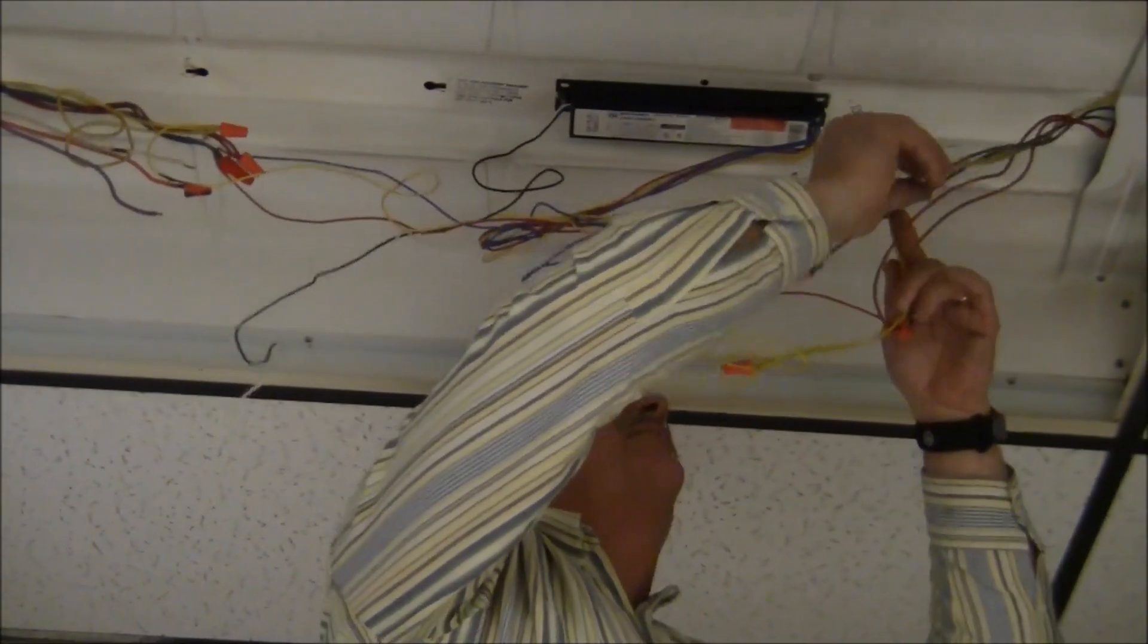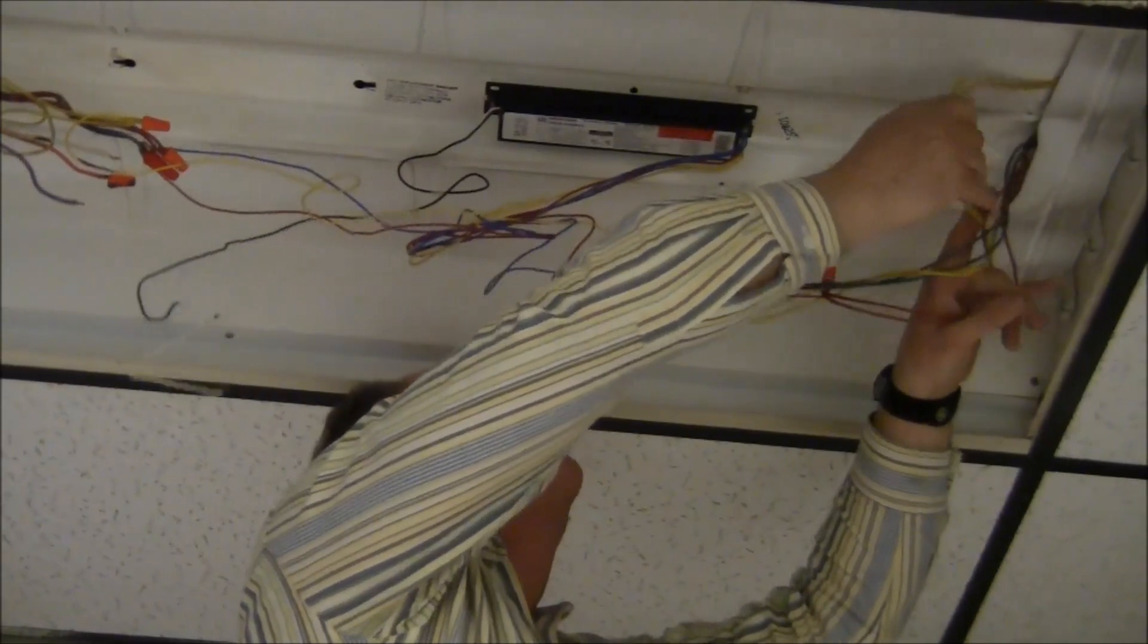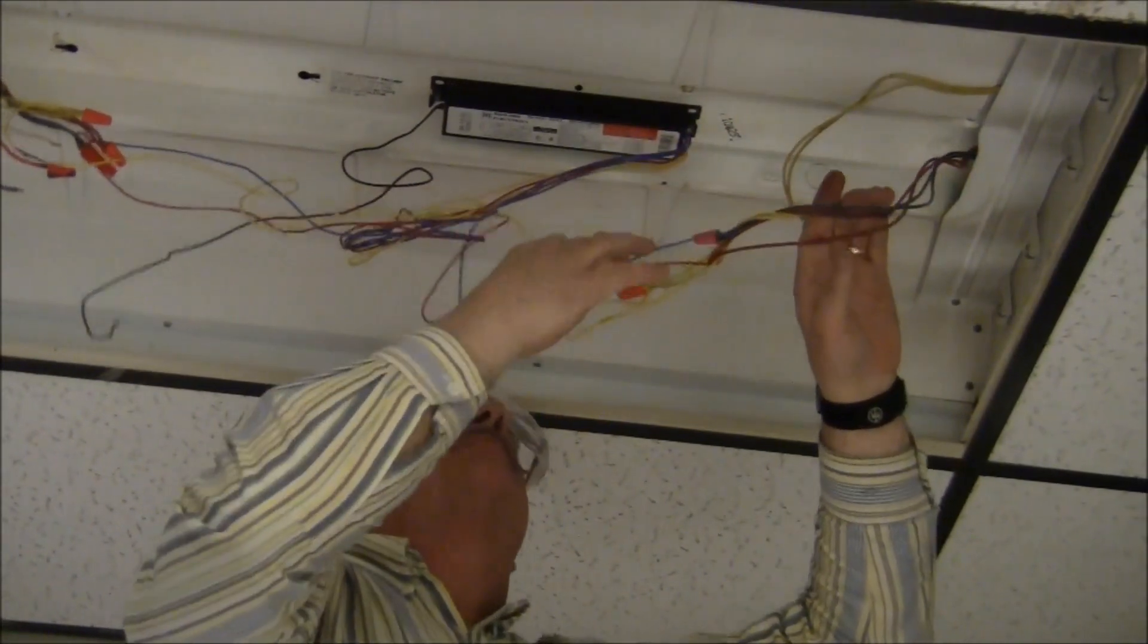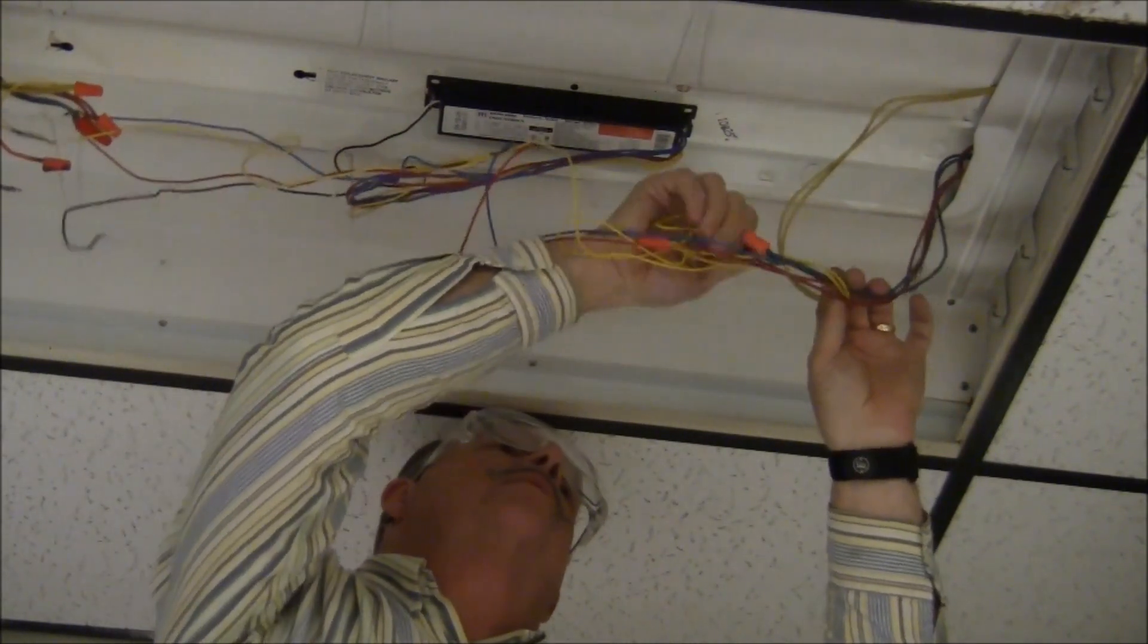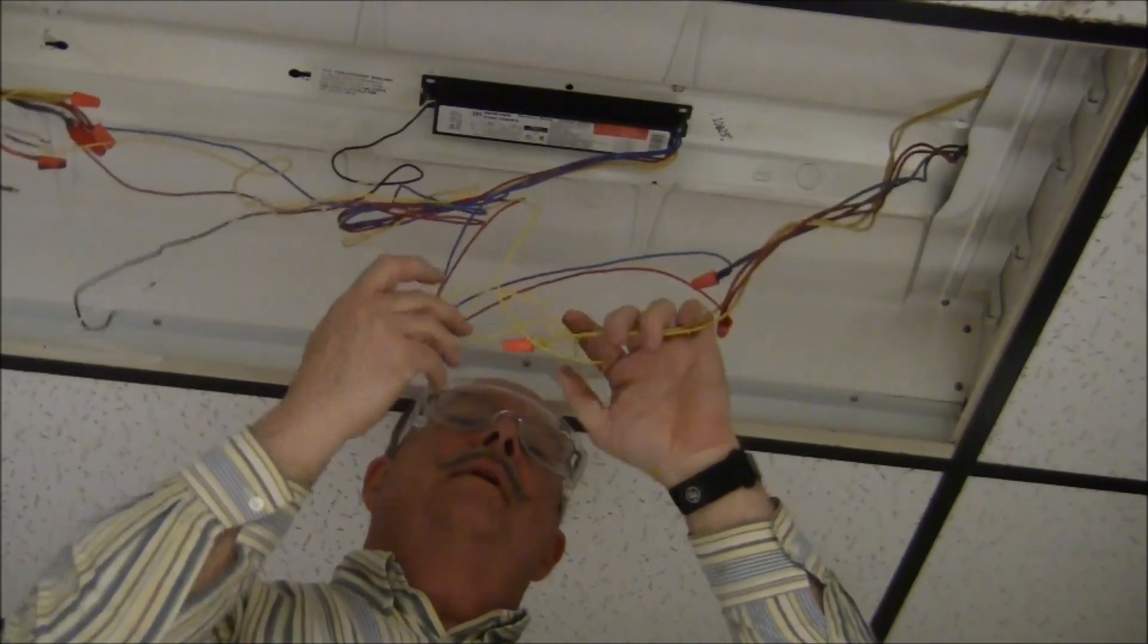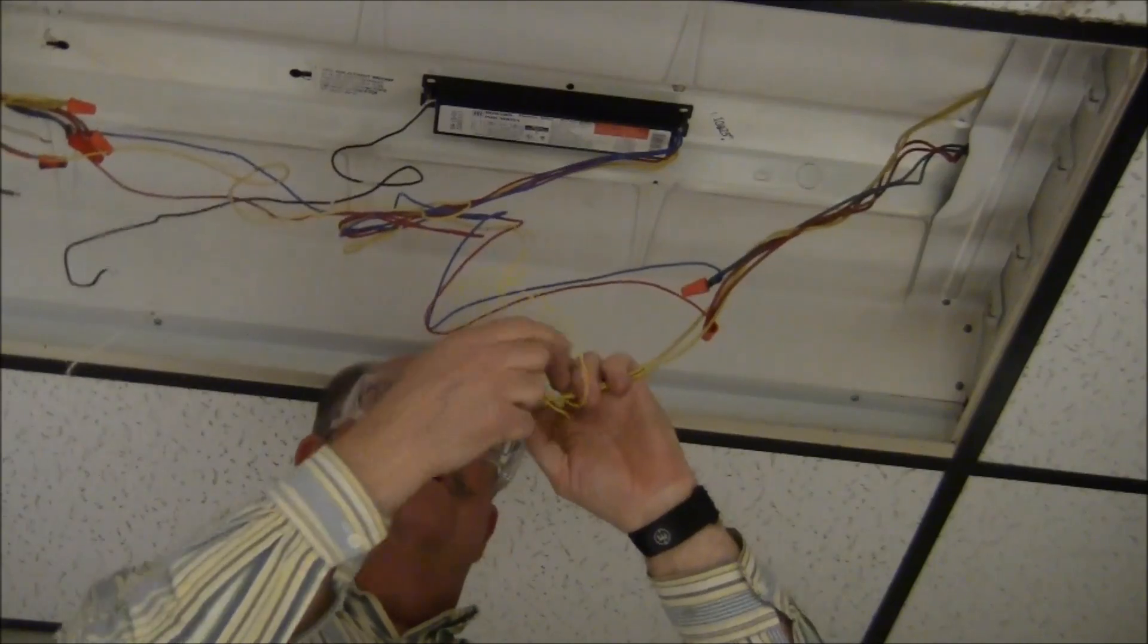One system that we found works pretty well is to find the yellow set of wires. In this case, this one's already been converted over to the electronic ballast, but in the older ballast there were two yellow wires going to each